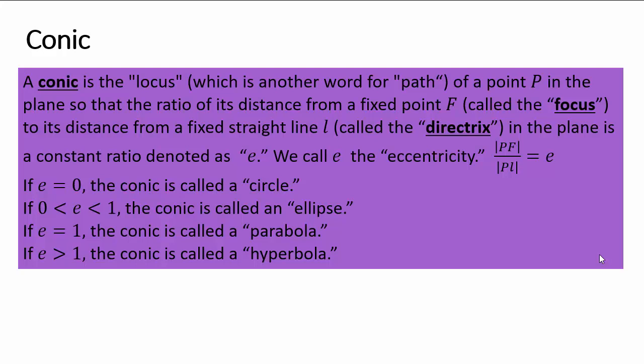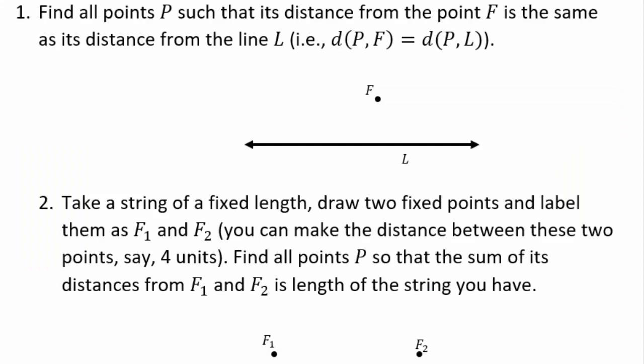We will look at conic sections in the following way: we will ask you to generate locus of points that satisfy some conditions, and when you look at those points, you will end up with one of these conic sections. Let's start with three exercises. Pause the video here and do these exercises. You have a fixed point and a fixed line — find all points that are exactly the same distance from point f as they are from line l.